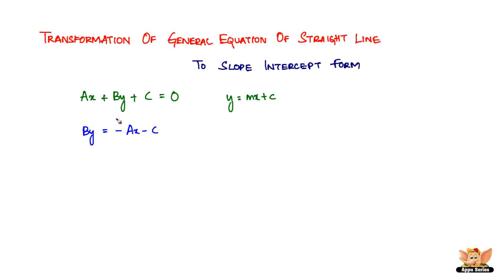So this is the first step, but we don't need by — we just need y for the slope-intercept form. So keep the y and divide the entire equation by b, where you get y equals minus a by b times x, minus c by b.